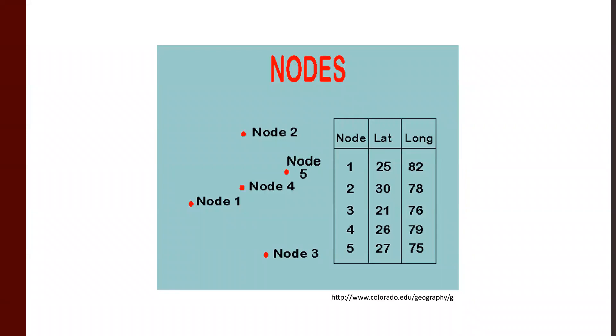We have our nodes 1, 2, 3, 4, and 5. Wait a second. That kind of looks like our feature ID we saw in the attribute table earlier.